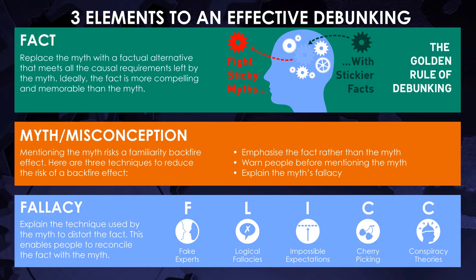Scientific misinformation usually comes with one or more of the five characteristics of science denial: fake experts are used, logical fallacies are in play, as are impossible expectations, cherry picking is rampant, and if everything else fails, conspiracy theories make an appearance. In the online course Denial 101X, these characteristics are referred to as FLICC.